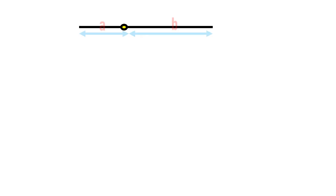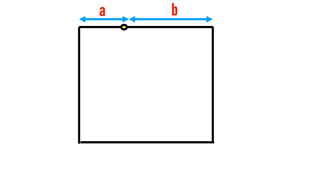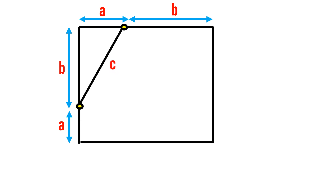Let this be a line, and select any point on this line. The segment on the left side is called a and on the right side b. Now let's draw a square. On another side, select another point with segments a and b. If we join these two points, let this length be c.